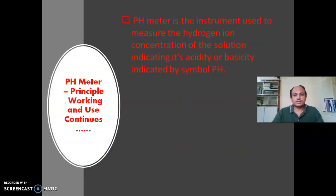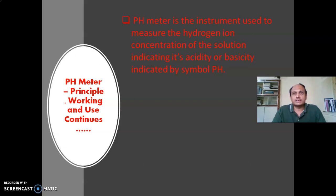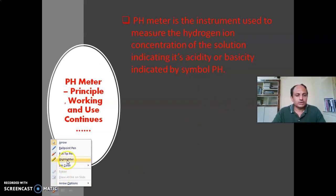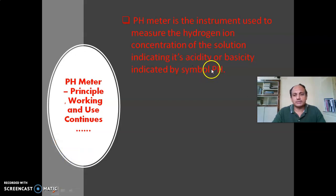The pH meter is the instrument which is used to measure the hydrogen ion concentration of the solution, which indicates the acidity or basicity of that particular solution. And the pH of that particular solution is indicated by the symbol pH.